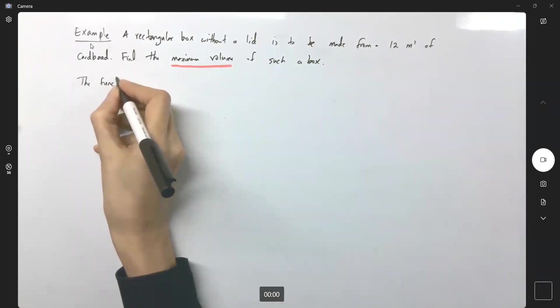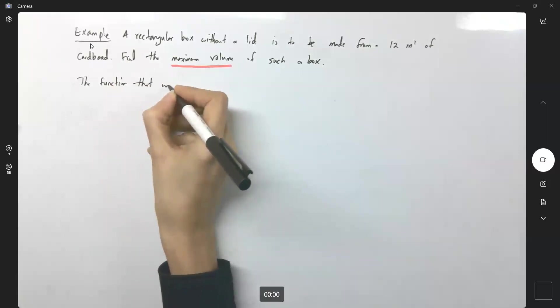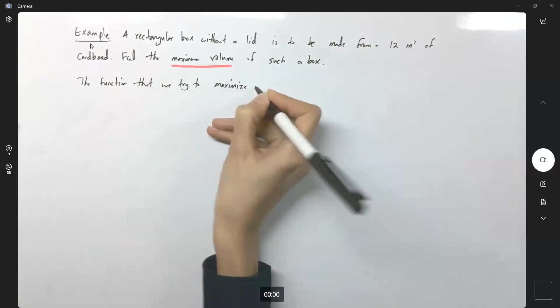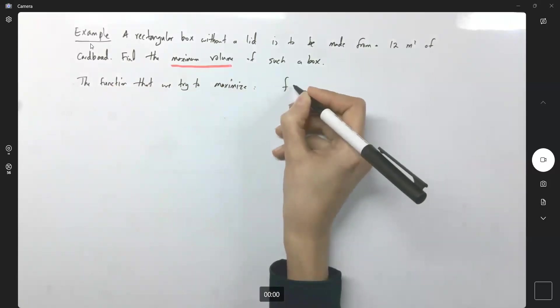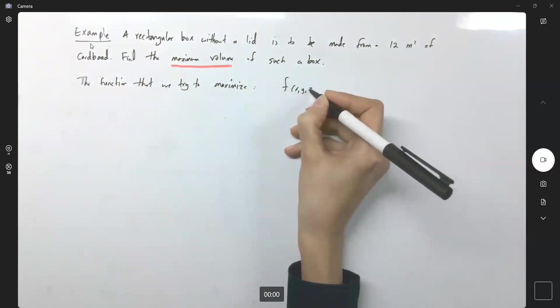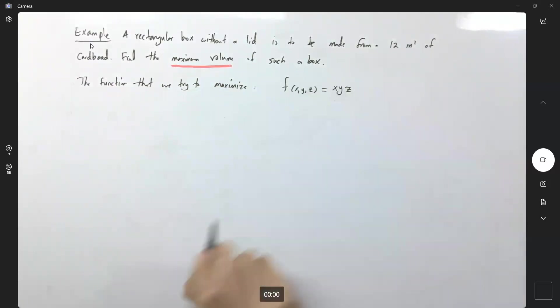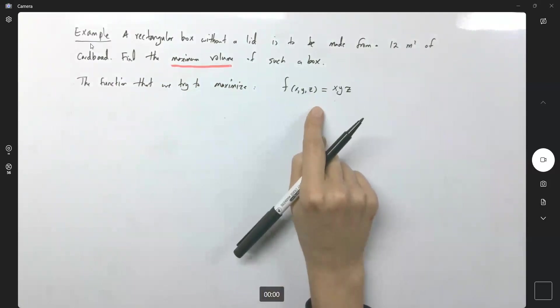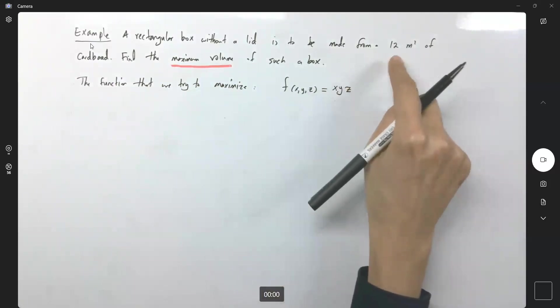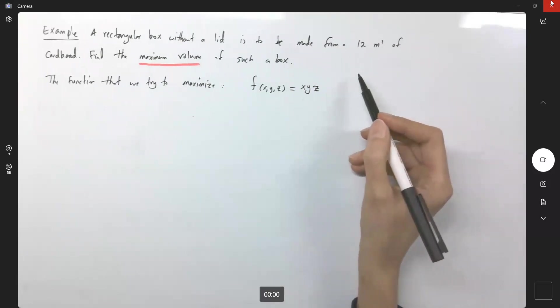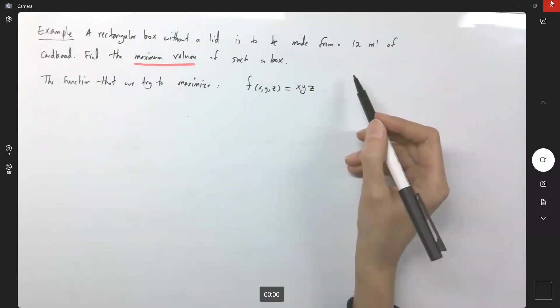So the function that we try to maximize is the volume function. You can write it as f of x, y, z equals to the volume of the box, x times y times z. We know we're going to maximize this. But what is our constraint? The constraint given to us here can be formulated from elementary calculus.